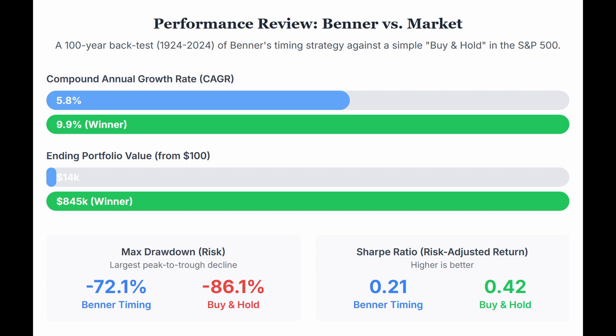That difference compounds massively. Starting with $100, the Benner strategy ends up around $14,350 while buy and hold reaches over $845,000. The Benner strategy did have a slightly smaller drawdown — it got you out in 2007 before the 2008 crash — but then kept you in cash all the way until 2012, missing the huge initial recovery rally from the 2009 bottom. It confirms the old saying: time in the market beats timing the market.